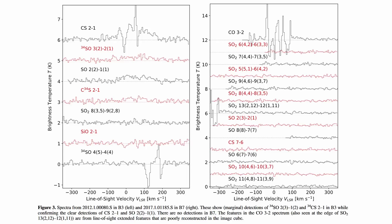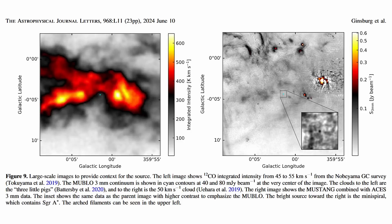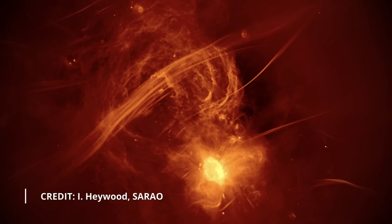The temperature measurements introduce another layer of complexity. The gas temperature of the MUBLO is estimated to be around 13-15 K, significantly cooler than what is typically observed in other molecular clouds within the central molecular zone, where temperatures usually range between 50 and 100 K. This stark temperature difference suggests that the MUBLO resides in an unusually cold and dense environment, which is atypical given the generally harsh and energetic conditions prevalent in the central molecular zone.